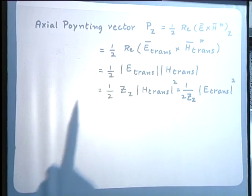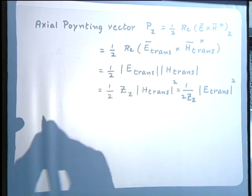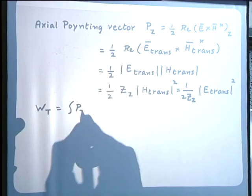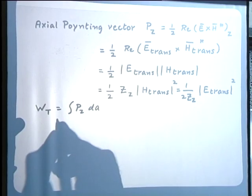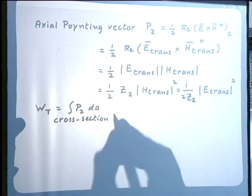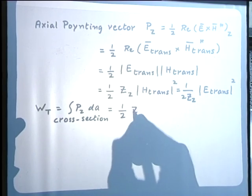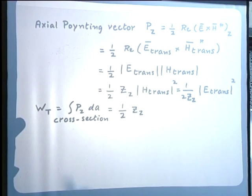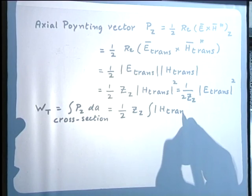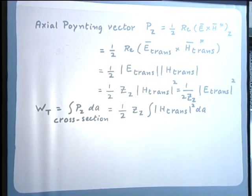What we have is the power transmitted per unit area. The total power transmitted W_t equals P_z integrated over the cross section of the waveguide, which turns out to be (1/2)Z_Z ∫|H_transverse|² dA, where Z_Z is a constant for the given waveguide and the integration is over the cross section.